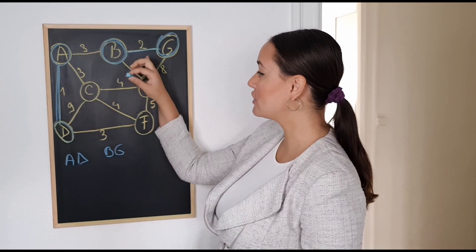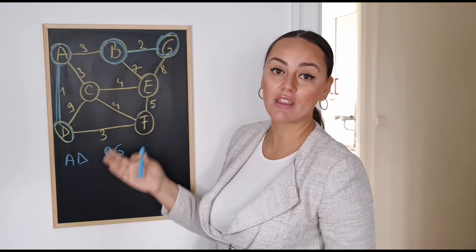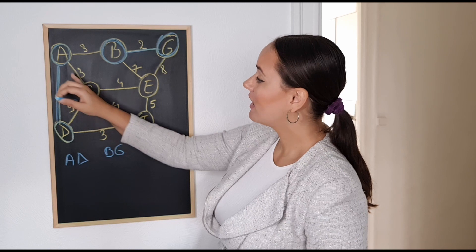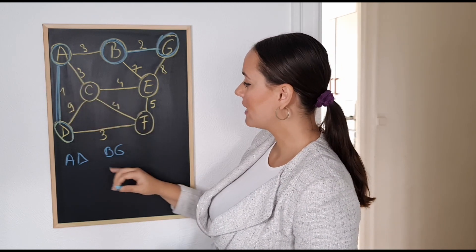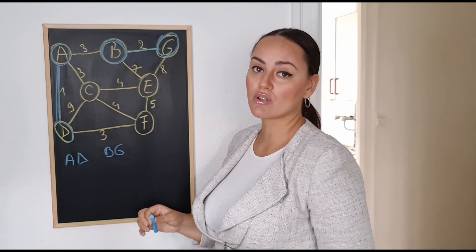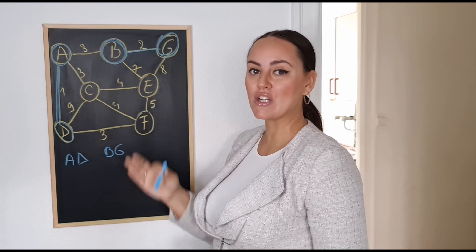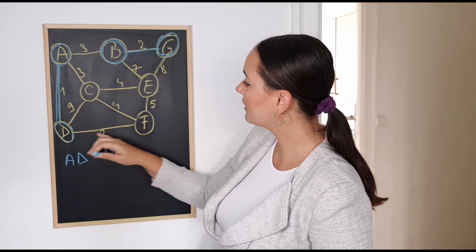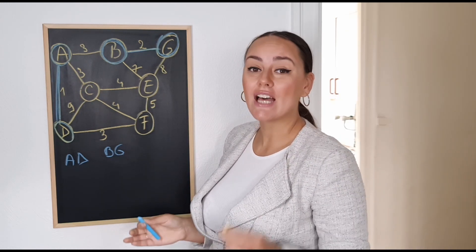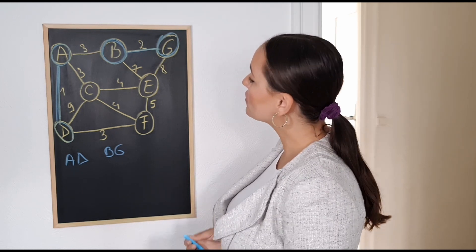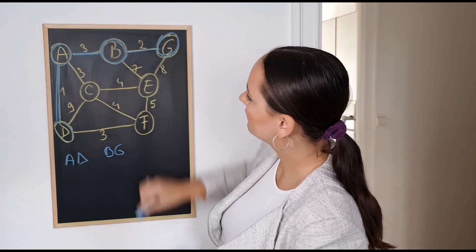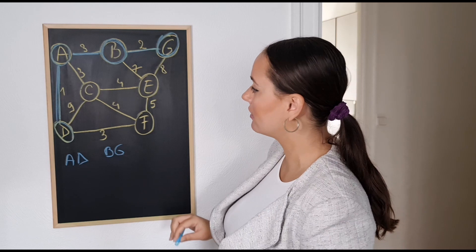We don't have any more edges with weight 1 or 2, so we're going to look at how many edges we have with weight 3 without creating any cycles. For example, if we see edge AC with weight 3 and then look at DC, connecting these three edges would create a cycle, which we're not allowed to do in Kruskal's algorithm. I can see three edges with weight 3: DF, AC, and AB. You can pick any edge as long as you do not create any cycles. I want to add AB — it has edge weight 3 and does not create any cycles.